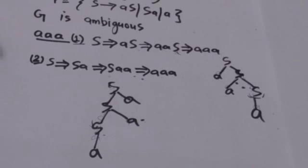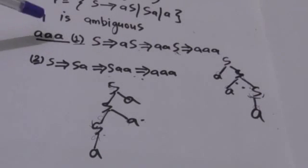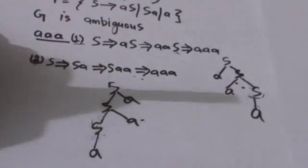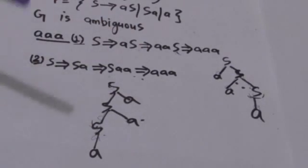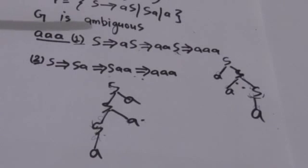Grammar G is an ambiguous grammar because its language has a string A A A which has more than one derivation trees, or we can say which has more than one leftmost derivations. Thank you very much.